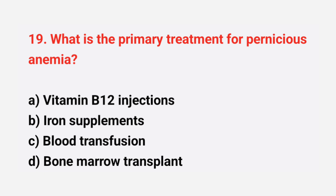Question number 19: what is the primary treatment for pernicious anemia? The right answer is option A, vitamin B12 injections.